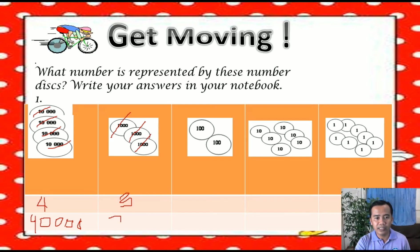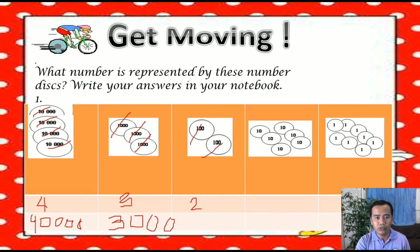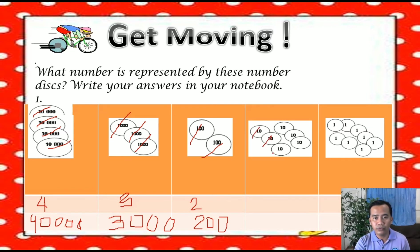That is equivalent to 3,000. How many 100 disks do we have? 1, 2 — we have 2. So that is 200. How many 10s do we have? 1, 2, 3, 4, 5, 6 — we have 6. That is 60.